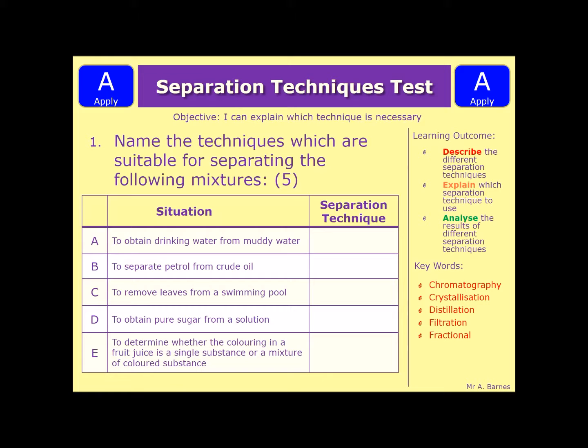A: to obtain drinking water from muddy water. B: to separate petrol from crude oil. C: to remove leaves from a swimming pool. D: to obtain pure sugar from a solution. And E: to determine whether the colouring in a fruit juice is a single substance or a mixture of coloured substances.